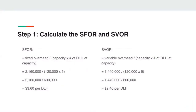Step one is to calculate the standard fixed overhead rate and the standard variable overhead rate. For the standard fixed overhead rate, similar to Chapter 5, you need the overhead cost amount divided by total direct labor hours. Total direct labor hours is found by multiplying capacity by number of direct labor hours: 2,160,000 divided by (120,000 multiplied by 5). Always calculate what's in the brackets first, then divide. This gives a standard fixed overhead rate of $3.60 per direct labor hour.